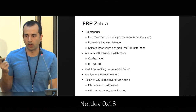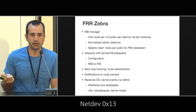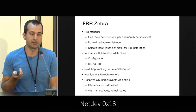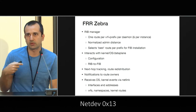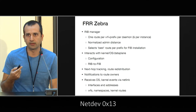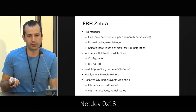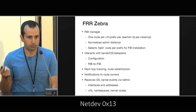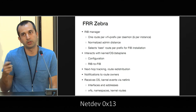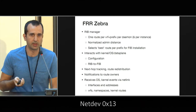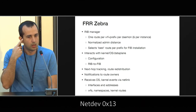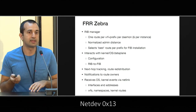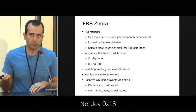The work we're going to present here is focused on Zebra. What are Zebra's responsibilities? It's the route manager. Daemons implement their own protocol logic and decide which routes should be installed, then they send them to Zebra. Zebra keeps track of route destinations, distance, and per-daemon metrics, because in some cases you can have more than one instance. It does a sort of normalization and then selects which route needs to be pushed to the forwarding plane.